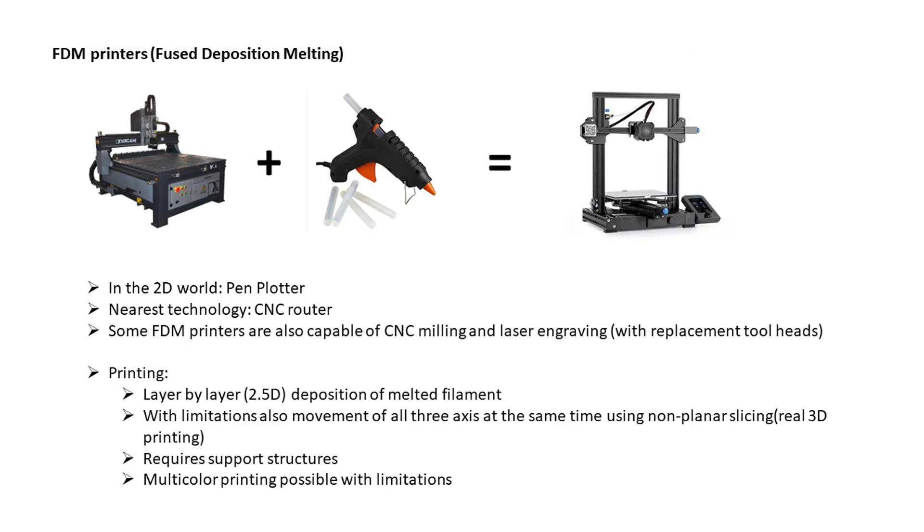Now we are looking at the technologies. The most common one is the FDM printer. This is very likely the result when a CNC router and a hot glue gun have a child together. In the 2D printer world the most common relative is a pen plotter. The material is applied layer by layer, 2.5D or with limitations, also non-planar in 3D. Overhangs on a certain amount require support structures. Using manual filament change on layer change, dual extruders, color changers or tool changers, also multi-color printing is possible.